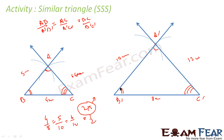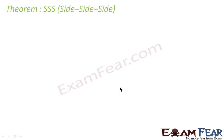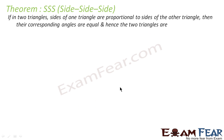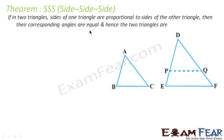If you can prove that all three sides are proportional, that means the triangles are similar. The theorem says: if in two triangles, the sides of one triangle are proportional to the sides of the other triangle, then the corresponding angles are also equal and the two triangles are similar.